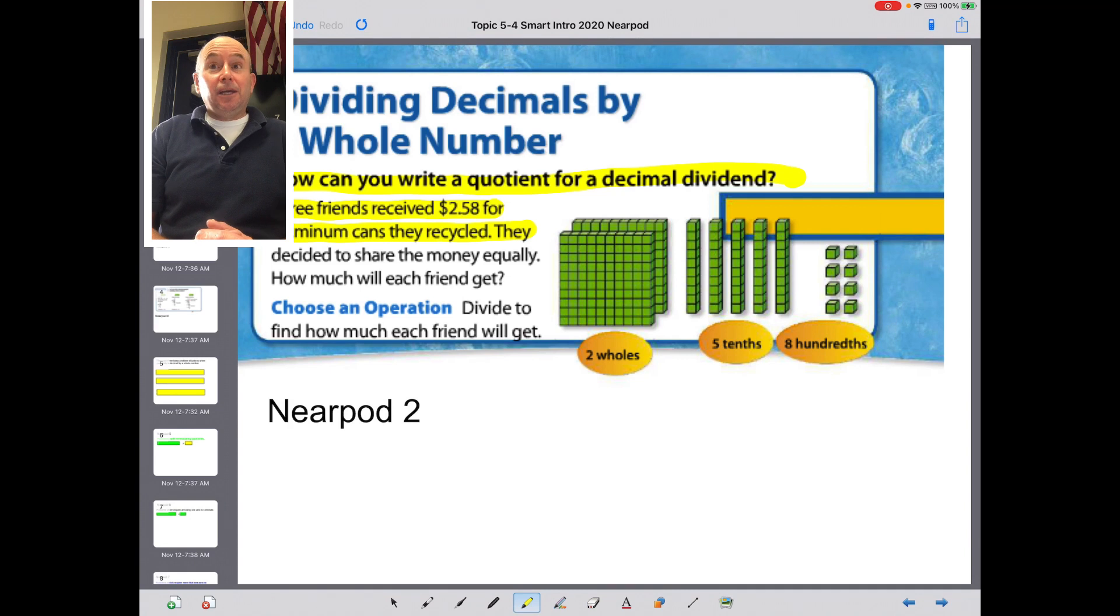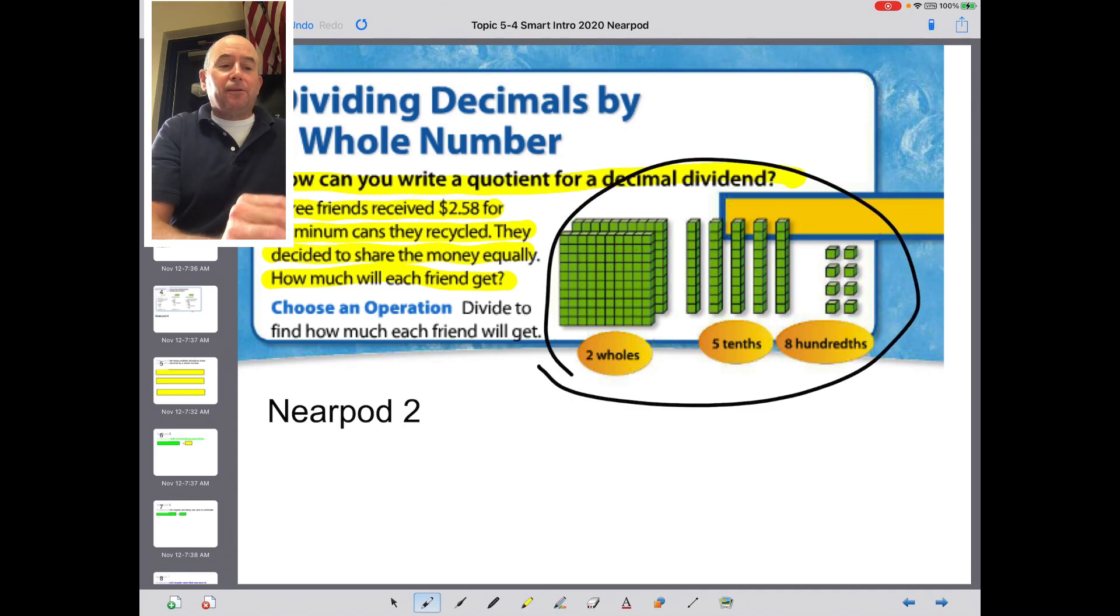They decided to share the money equally. How much will each friend get? So this is a classic division problem, right? They've got the little model set up there that represents the money. They have the two wholes, which is the two dollars. They have the five tenths, which is the 50 cents. And then they have the eight hundredths, which hundredths are pennies, right?